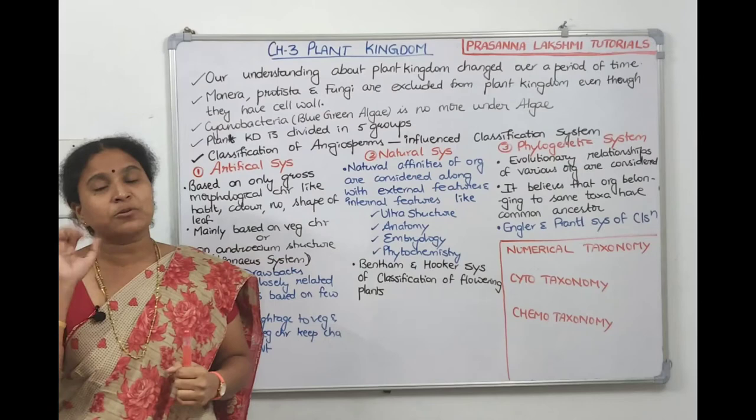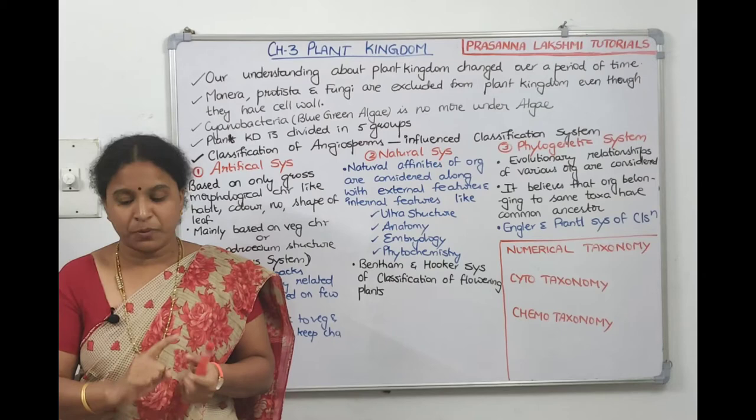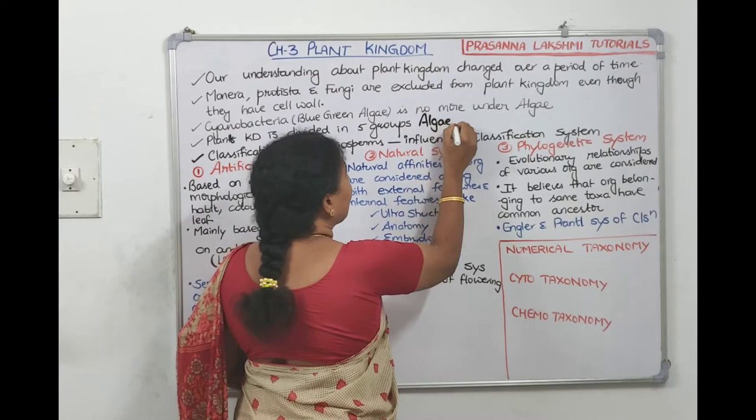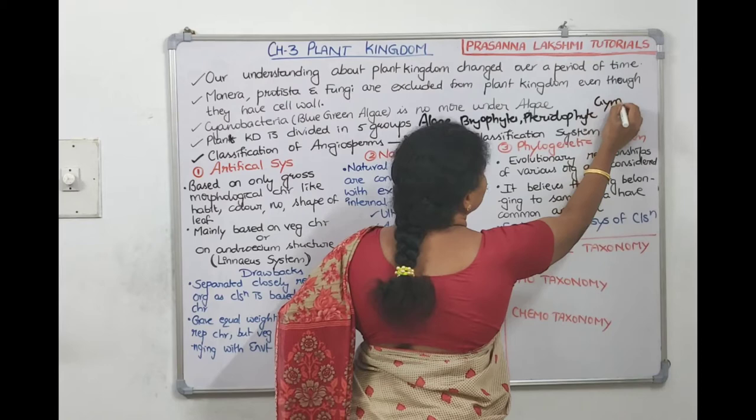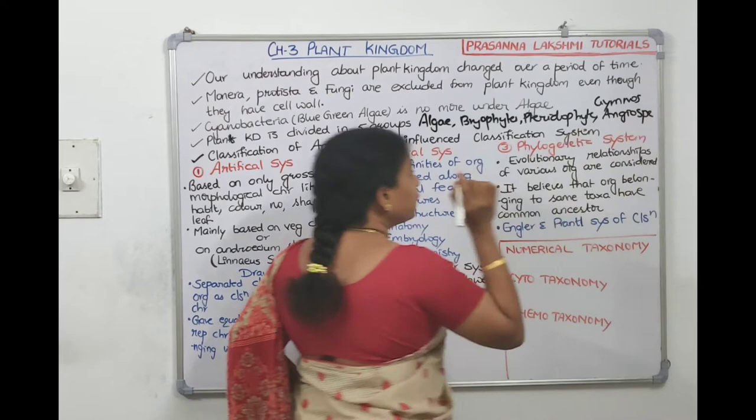Plant kingdom is divided into five groups: Algae, Bryophyta, Pteridophyta, Gymnosperms, and Angiosperms.